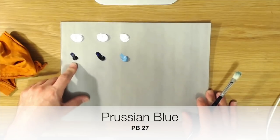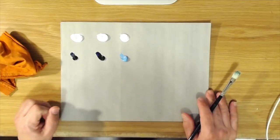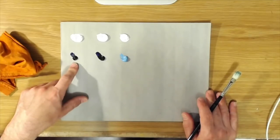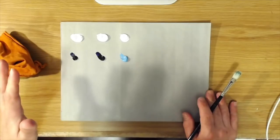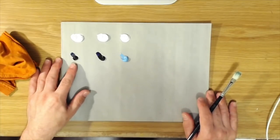Prussian blue is a pretty old color. It's pigment blue or PB27 and it has kind of an interesting history. It was discovered in the early 1700s, right around 1706, 1707, something like that.